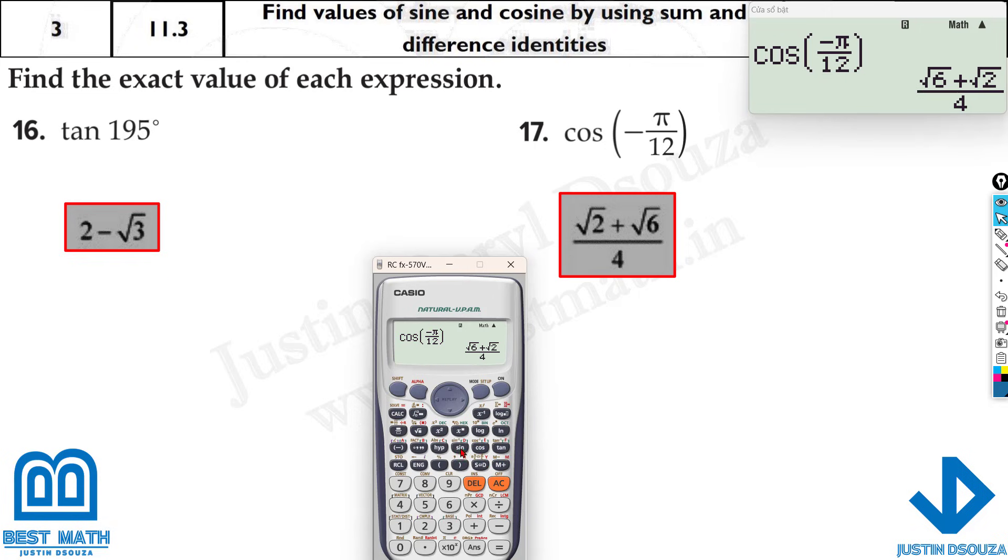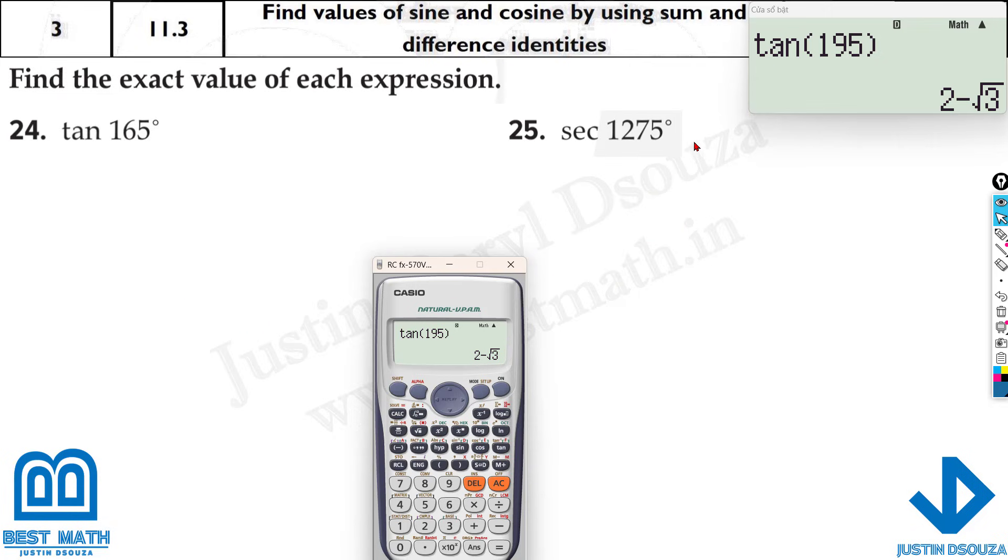But when we solve this over here, tan 195. Let me do it in the radian mode. Now it's already in radians. This is wrong. But now let me change it to the degree mode. Yes, this is correct. This is how we solve it. Please do solve all these problems by yourselves.